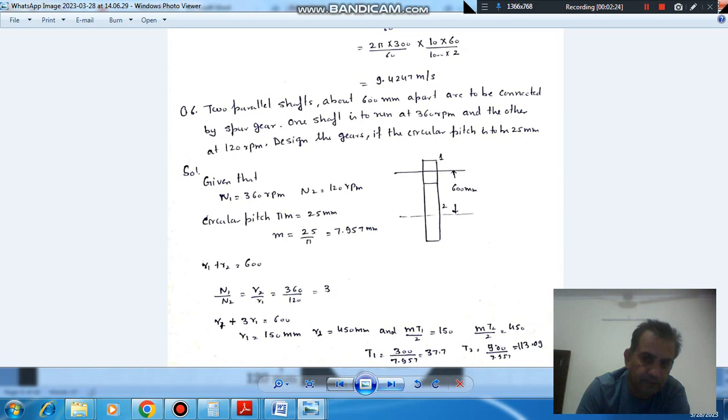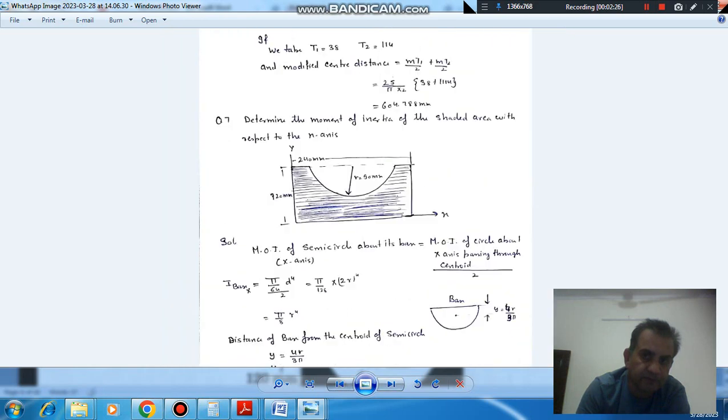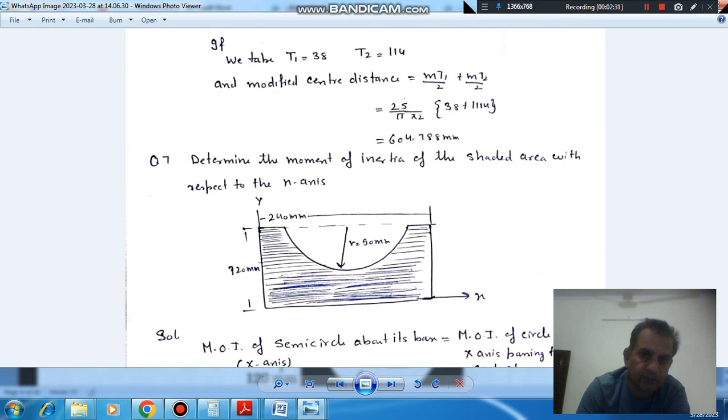But the number of teeth on the gears should maintain the ratio. So taking it as 38 and this as 114, because your ratio is 3. So the number of teeth on pinion is 38.